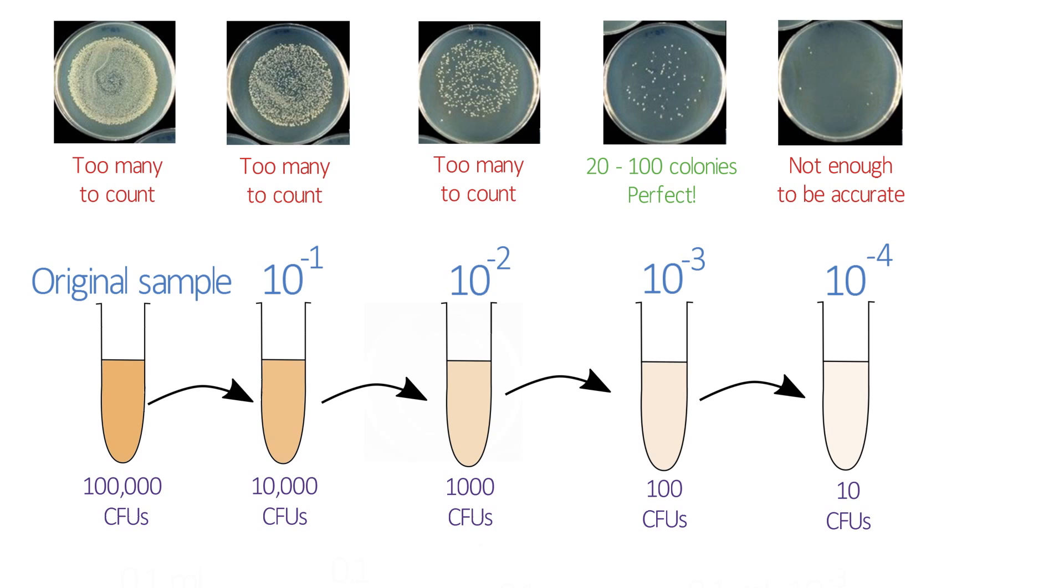Any more than that, and there'll just be too many colonies to count, but counts below 20 tend to be quite inaccurate. It just becomes a matter of chance as to whether you get, say, four or six bacteria on the plate, but that might mean that you get quite significant errors in your calculations.